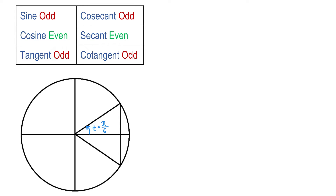t is a real number and it also represents the measure of this angle in radians. For pi over 6, the corresponding point on the unit circle has the coordinates square root of 3 over 2 and 1 half.